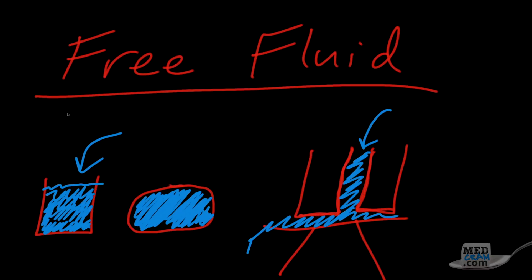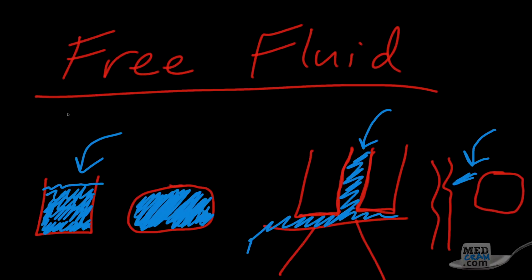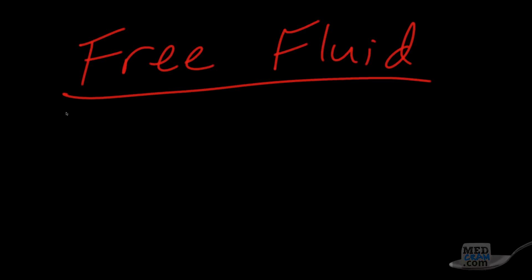In the body, if there is fluid between the bladder and bowel, that fluid is free — it outlines the bowel on one side and the bladder on the other. These shapes are more sharp, not geometric, with sharp borders, and the fluid goes to the most dependent area in that theoretical space.